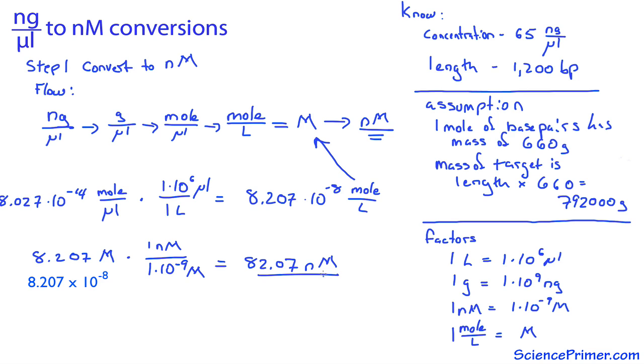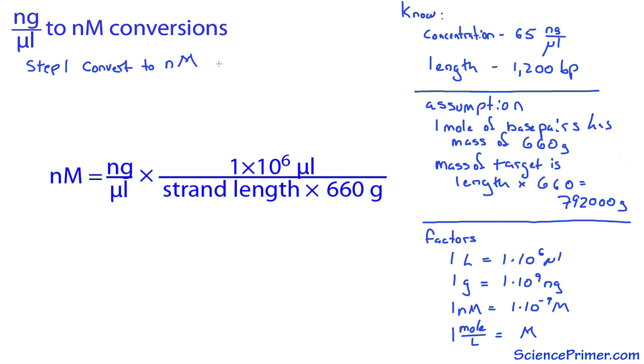There is a shortcut. The same value can be arrived at by multiplying the nanogram per microliter value by 1 times 10 to the 6, then dividing by the length of the DNA times 660.